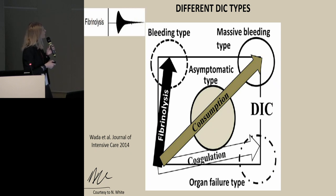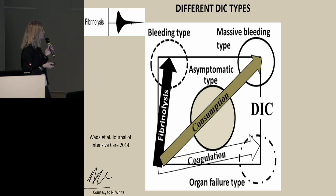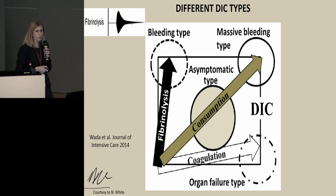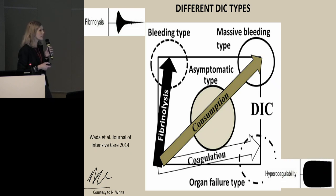If we run a ROTEM or a TEG, it will show hyperfibrinolysis. This is something we see often in hematological patients — patients with hematological malignancy. If we have the coagulation vector large and increased, and the fibrinolysis vector lower, then the clots will form but will not be lysed, and we will get microthrombosis and organ dysfunction. This is something we see in infection.